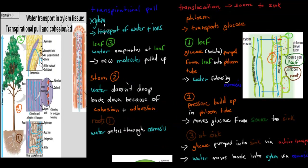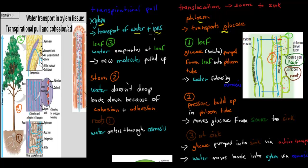Now I'll talk about plants. Plants don't have blood vessels but they do have xylem and phloem. Xylem is where water and ions are transported. Phloem is where glucose is transported around the plant.